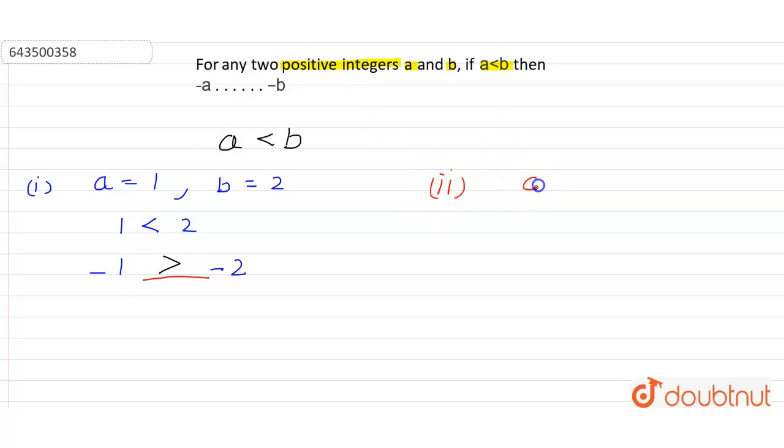In this case if I'll take a is equal to 5 and b is equal to 11, again this satisfies the condition then a is lesser than b, yes a is lesser than b and 5 is lesser than 11.